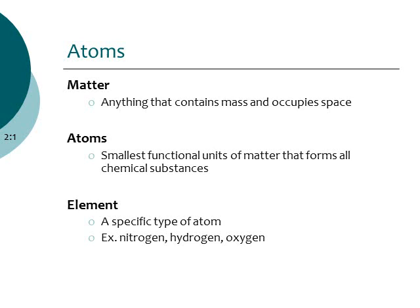Specific types of atoms are called elements, and you'll find these elements on the periodic table, which we'll look at in a little bit. Examples of elements include nitrogen, hydrogen, oxygen, carbon, phosphorus, and sulfur. Atoms of these different elements come together to form molecules. When you have two or more atoms — it can be atoms of the same element, like two oxygen atoms, or atoms from different elements, like one oxygen and two hydrogens — when those atoms bond together, they make up molecules.